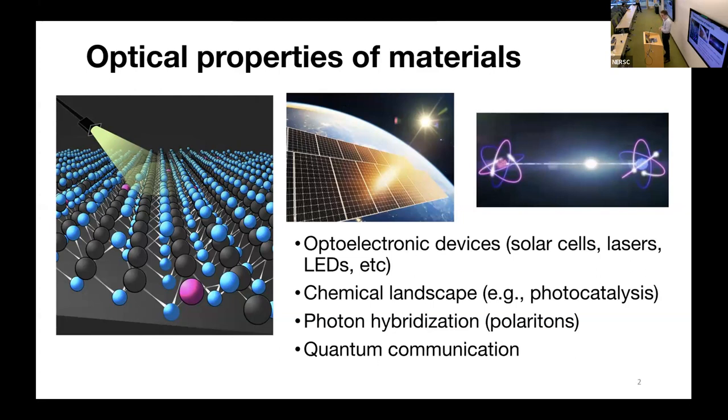But the interactions of light with matter are very important for a number of applications. Some of these include optoelectronic devices like solar cells and lasers, altering chemical landscapes using photocatalysis, and quantum communication. If these two entities couple strongly, you can have hybridization of light and matter leading to polaritons.